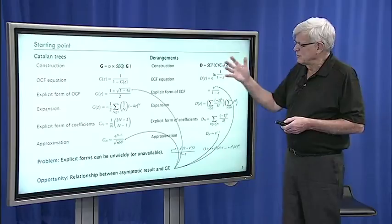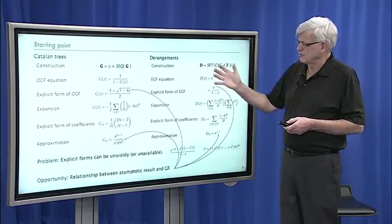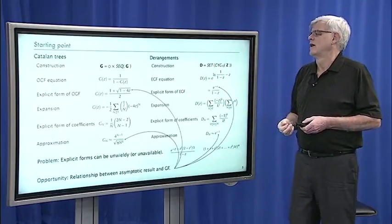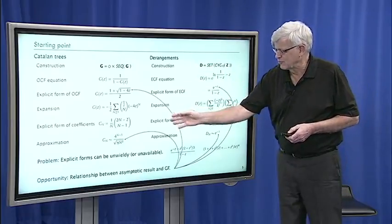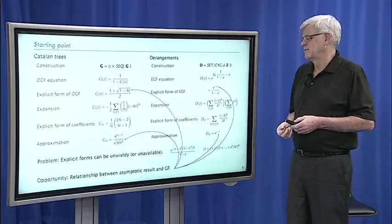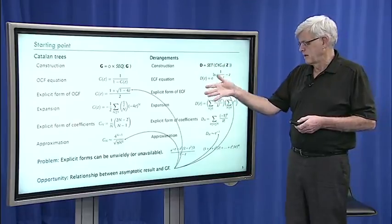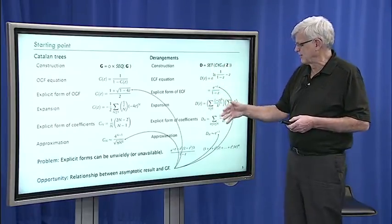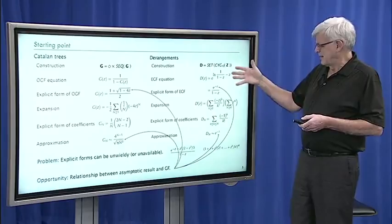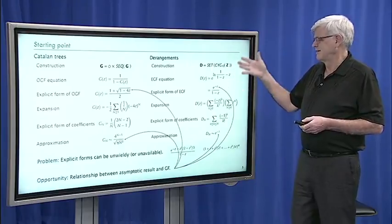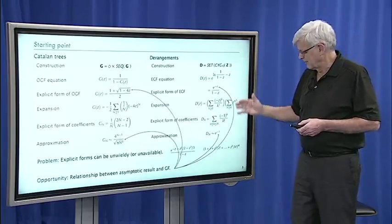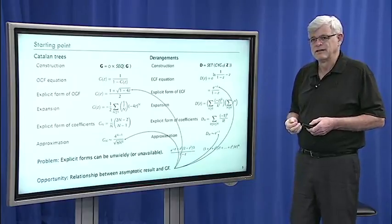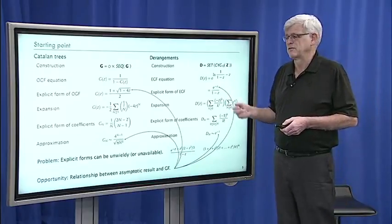Even in those two examples you can kind of see it. There's a square root in the explicit form for Catalan trees, and there's a square root of n cubed in the denominator in the asymptotic approximation. There's an e to the minus in the generating function for derangements, and there's an e to the minus in the asymptotic result. And as we'll see, that's no coincidence.